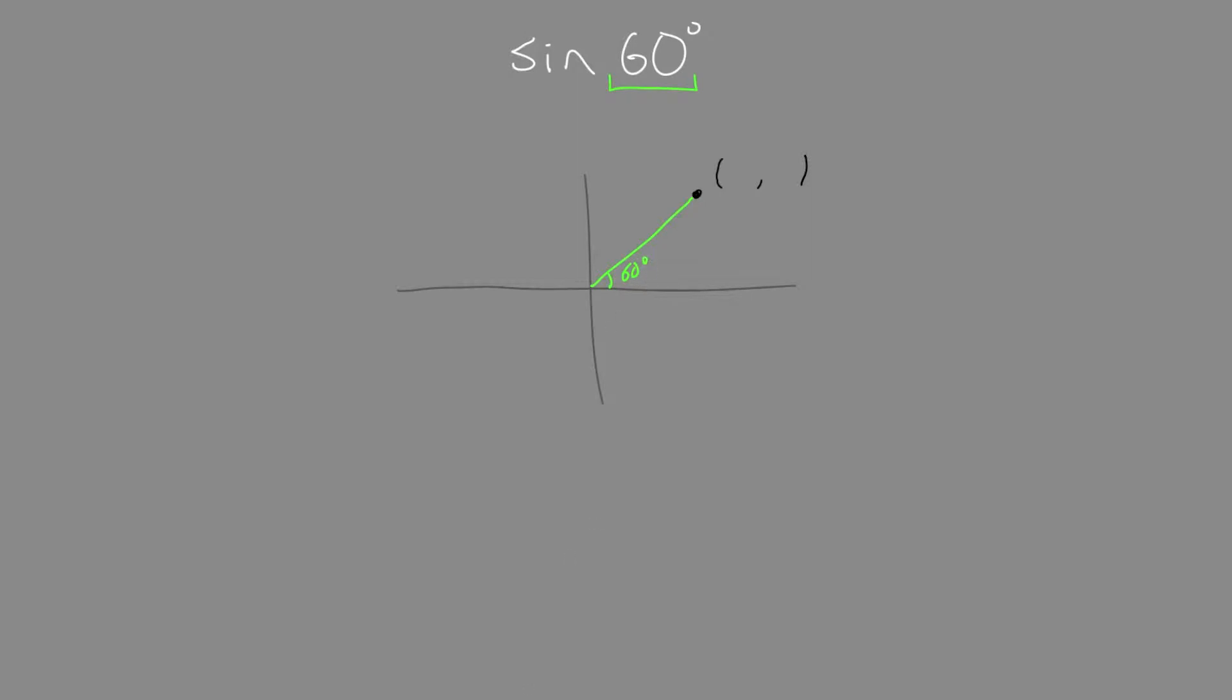So we're going to use special triangles to determine the lengths of the triangle. This is a right-angled triangle. There's two triangles you have to remember. A 45-degree triangle and a 30-60 triangle. These are both right-angled triangles.